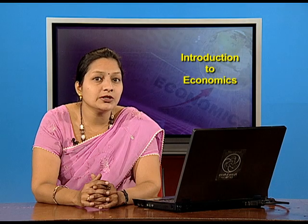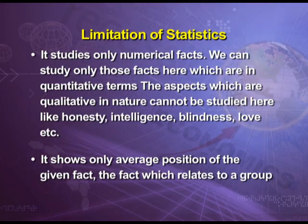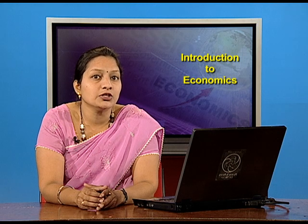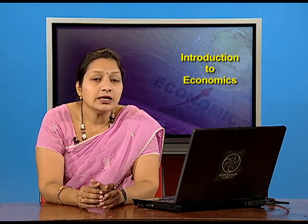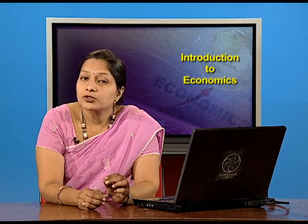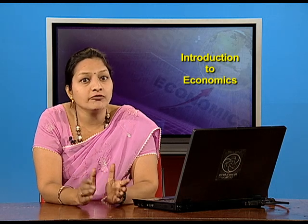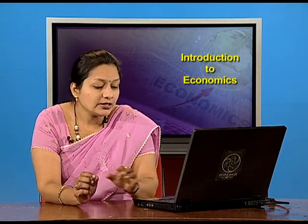The second limitation is that statistics shows only the average position of a given fact relating to a group. It does not give information about each and every individual of the universe — it gives the average of all. So it should be kept in mind that some individuals' results may be far better or far worse than the average. For example, if a statistical investigation shows that the average income of an Indian individual is rupees 1500 per month, this fact is true only in average form.